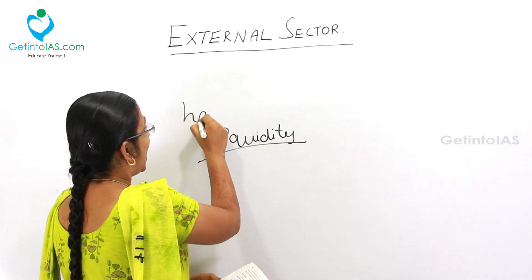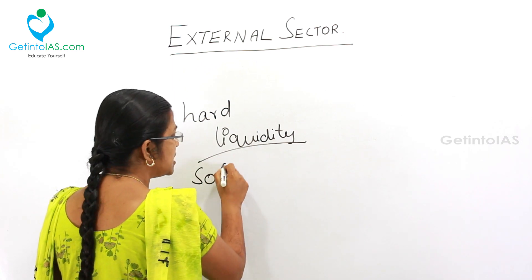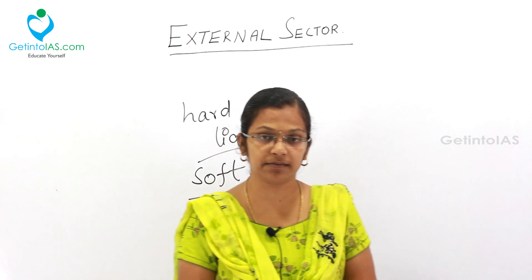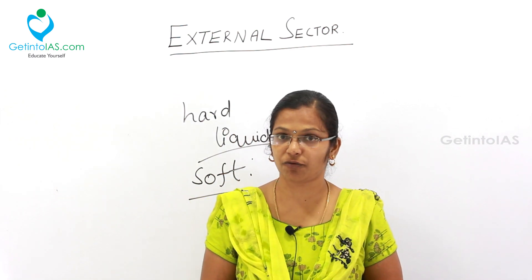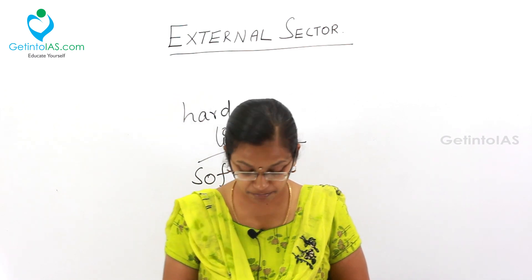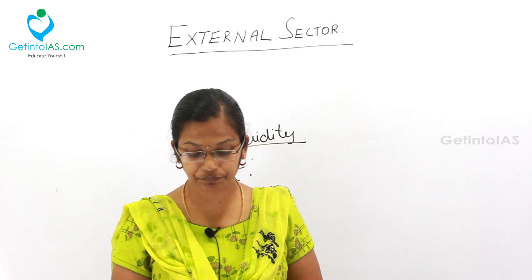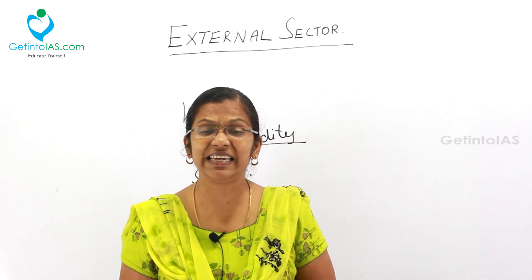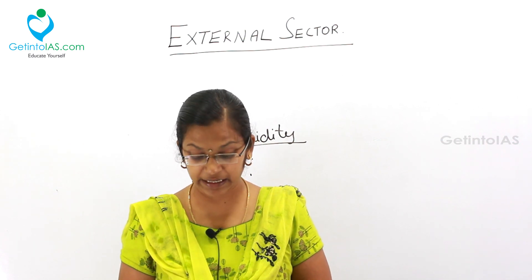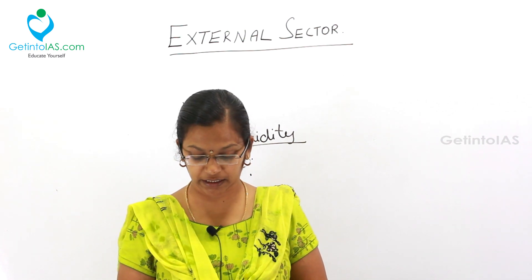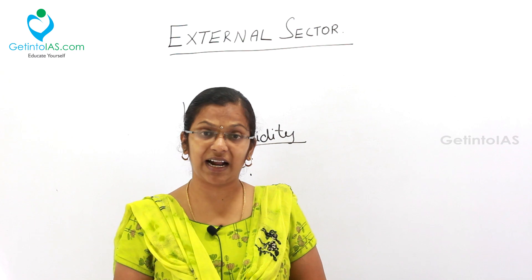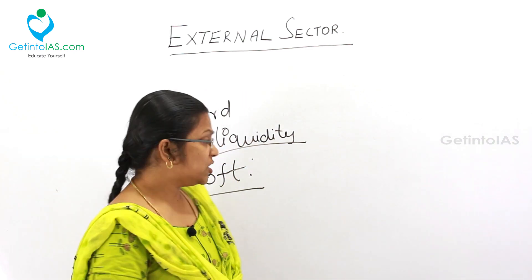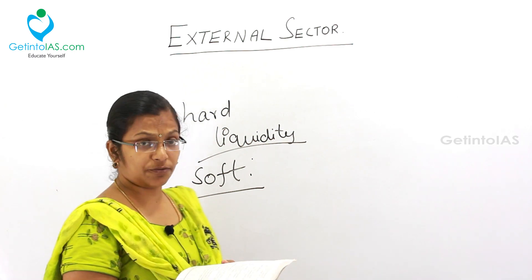The opposite of hard currency is soft currency. The best example of soft currency is Indian money — the Indian rupee. It is a currency that is easily available in any economy. That is called soft currency. So Indian rupee is a soft currency.